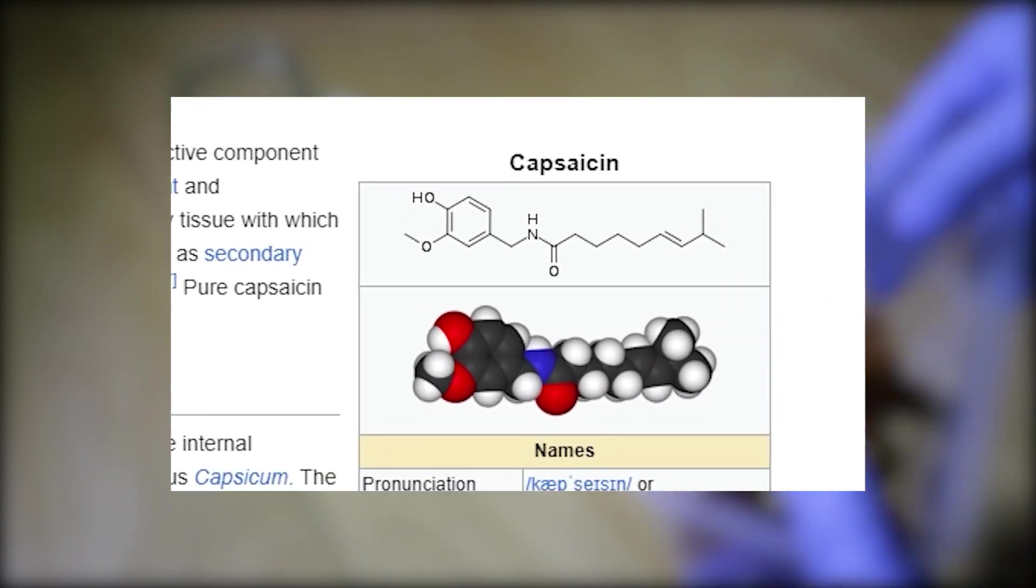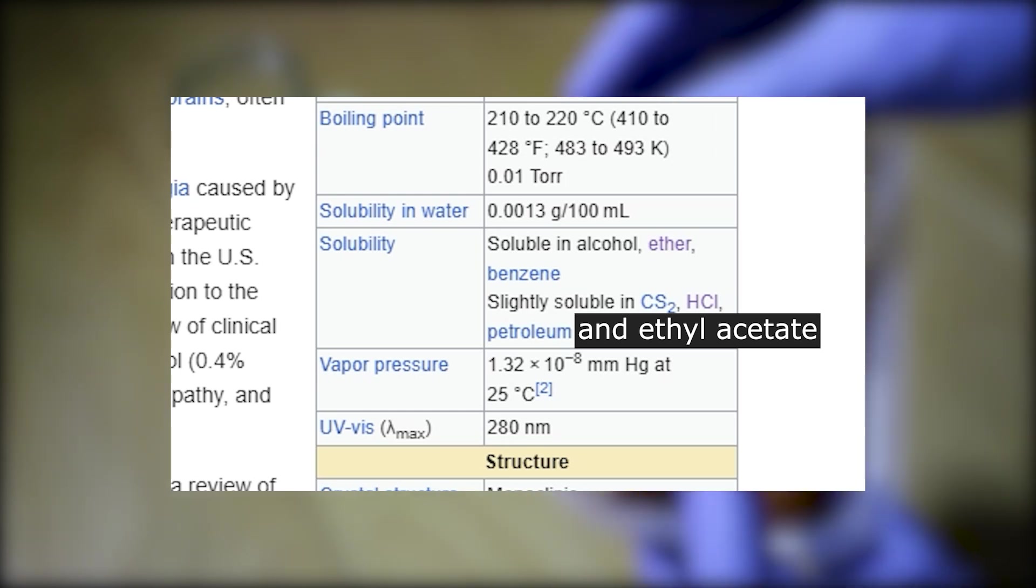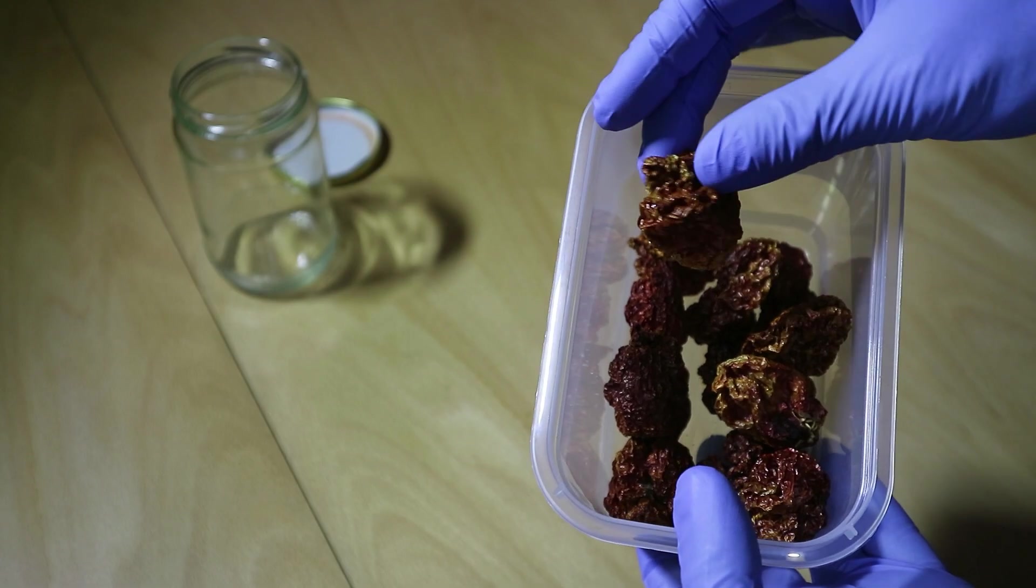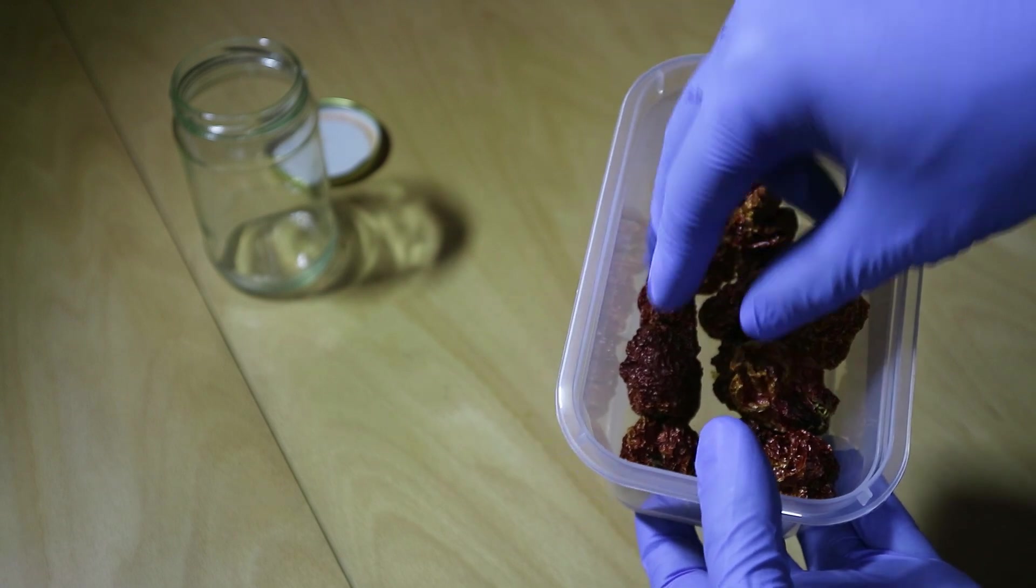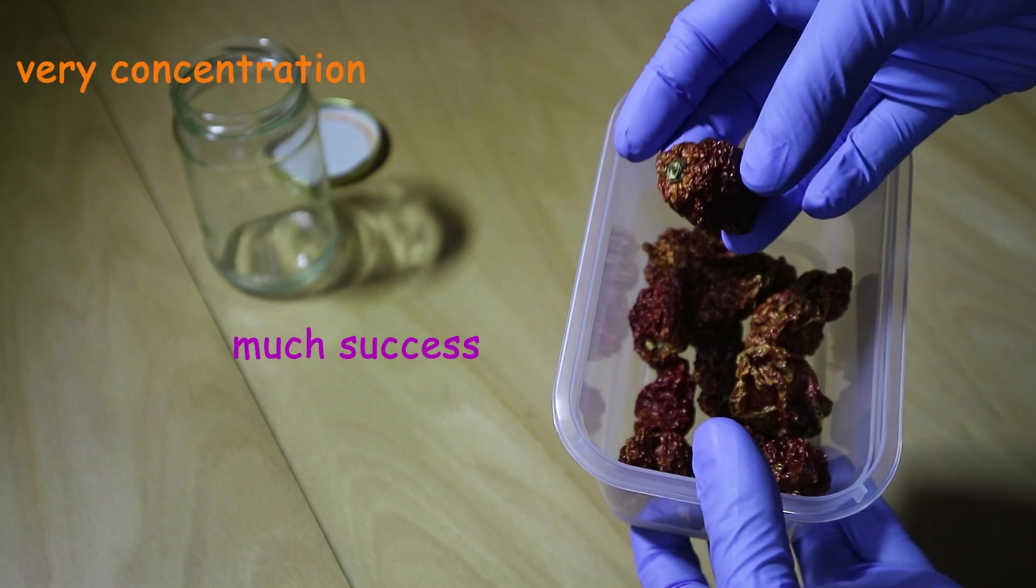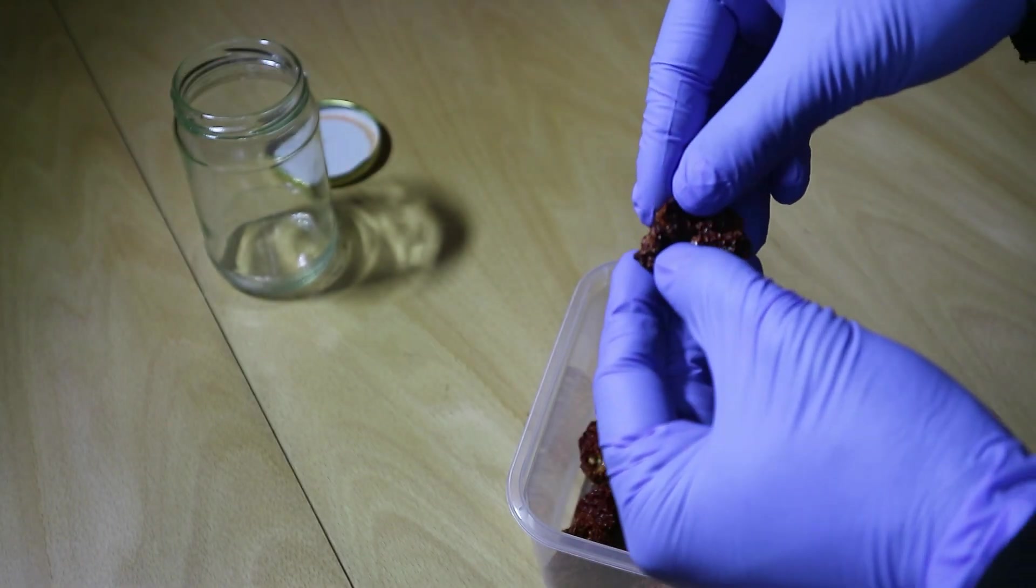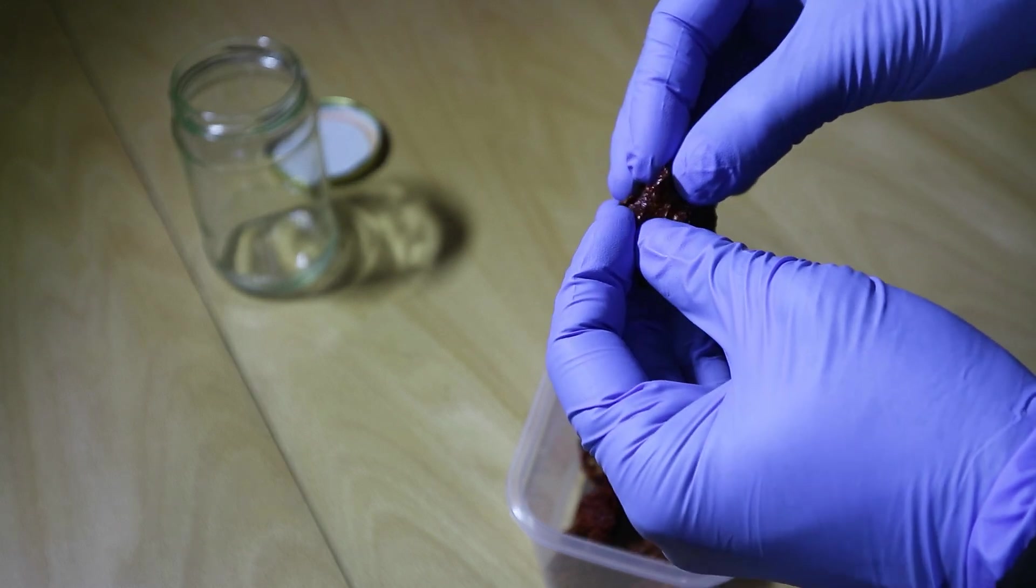Well, capsaicin is very soluble in ethyl acetate, so we'll just use a Soxhlet extractor and use ethyl acetate and chili powder. We'll use Carolina Reaper for that because it's very spicy, big concentration, so bigger chance of getting something at the end of it all, and we'll worry about recrystallizing and purifying later.